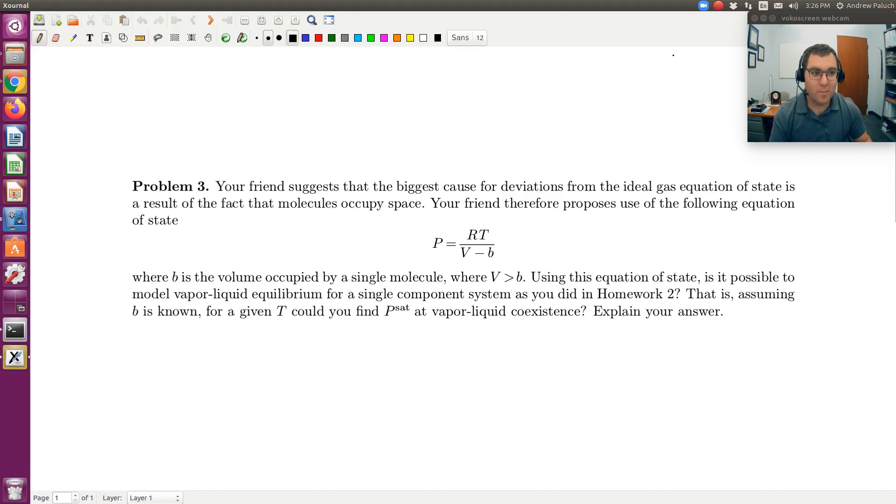All right, let's take a look at problem 3. So problem 3 is another fun one and actually an old exam question. Your friend suggests that the biggest cause for deviations from the ideal gas equation of state is a result of the fact that molecules occupy space. Your friend therefore proposes use of the following equation of state, P is equal to RT divided by V minus B.